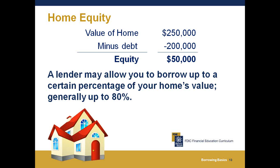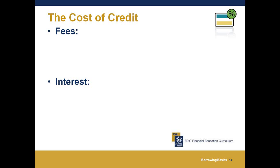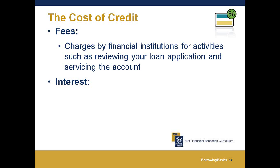When you get a loan, there are generally two costs you must pay: fees and interest. Fees are charged by your financial institution for activities such as reviewing your loan application or servicing your account. A credit card company might charge an annual maintenance fee of $30, a service fee for a cash advance, or a penalty fee for charging over your credit limit. A lender might also charge a $30 late fee when you don't pay your bill on time. Always try to pay five days ahead of your due date.